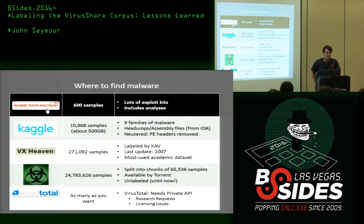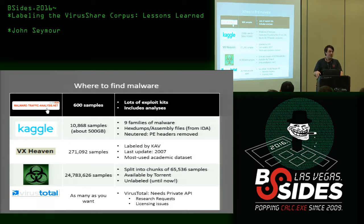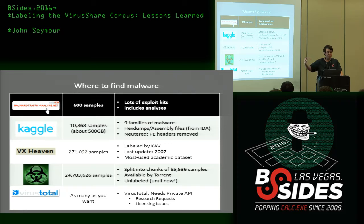What we'll be talking about today is VirusShare. It has about 25 million samples — actually increased since I made this slide. It's split into chunks of 65,536 samples each, so chunk zero has the first 65,536 files found, chunk one has the next, and so on. This ends up being pretty useful, and we'll talk about that in a minute.